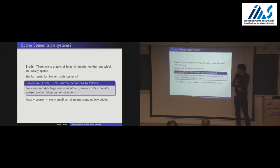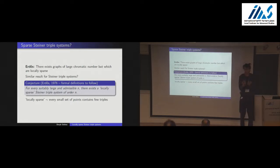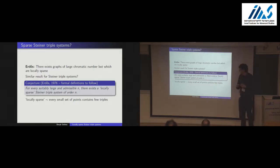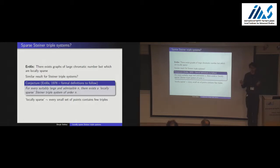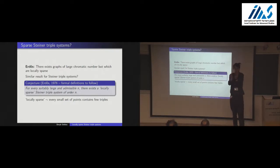Can we emulate something like this for Steiner triple systems? Could we find a Steiner triple system which is locally sparse? Locally sparse means that if you look at any small set of points, there will be few triples on that set of points.